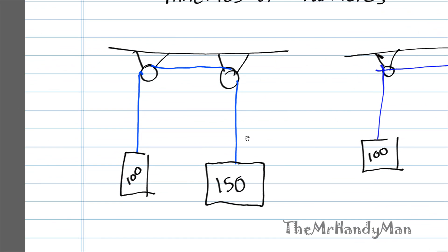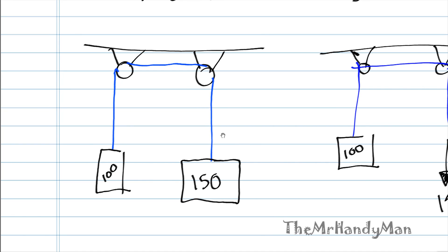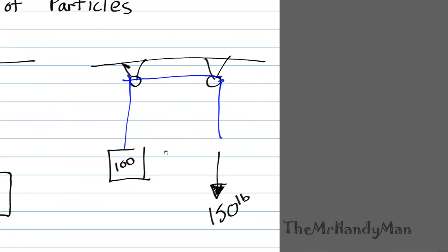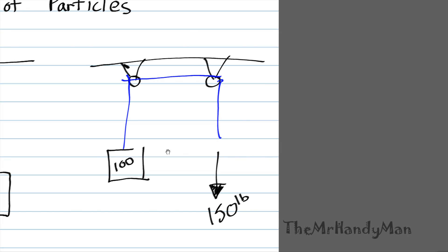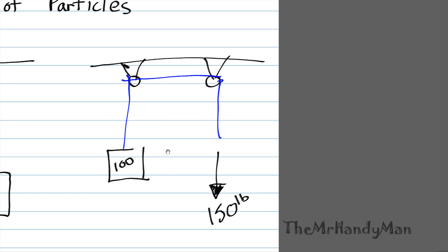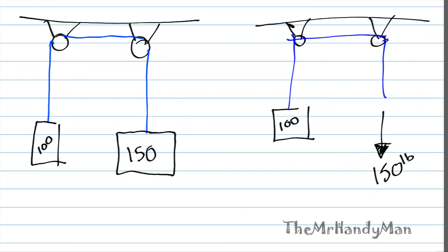In our first situation we have a 150 pound box, and on this situation on the right we have a 150 pound force. I just want to explore why they're significantly different.